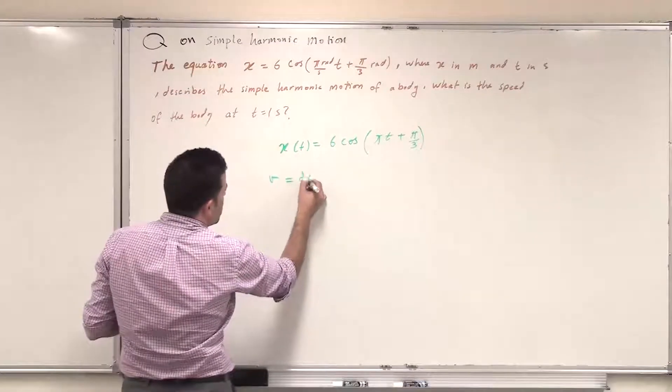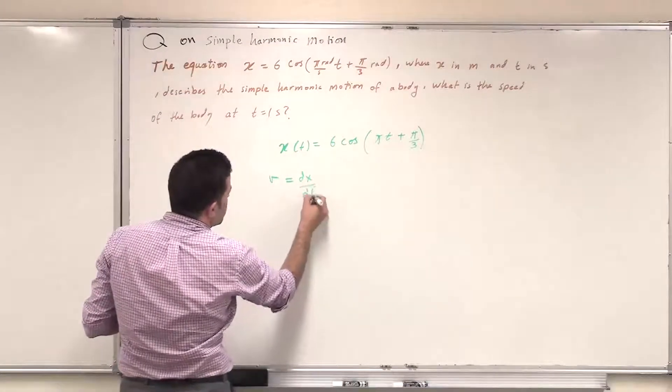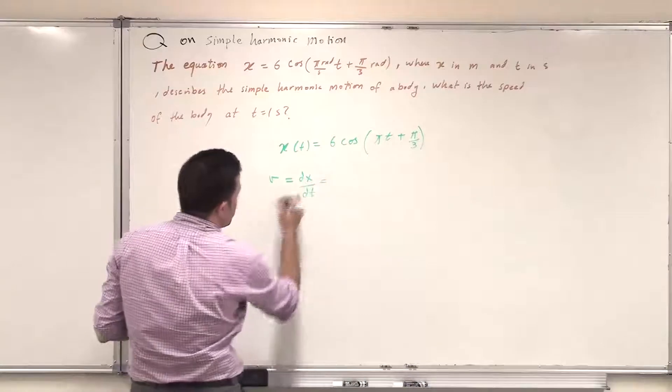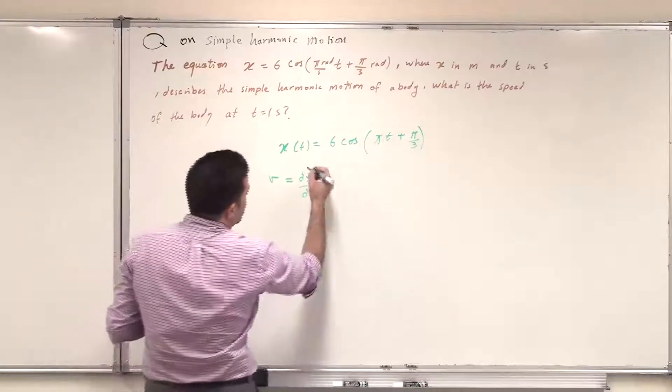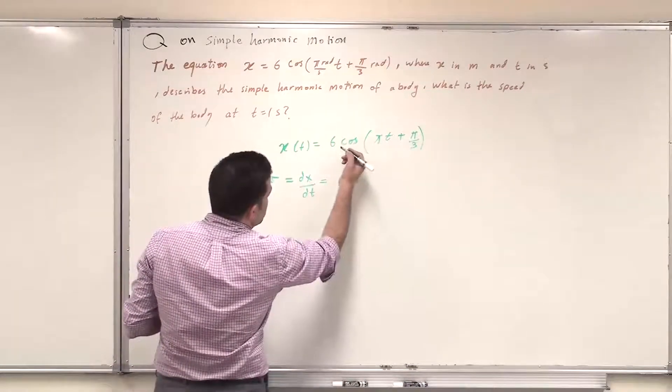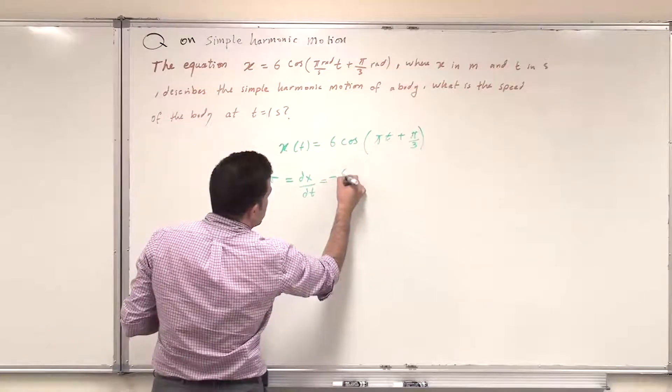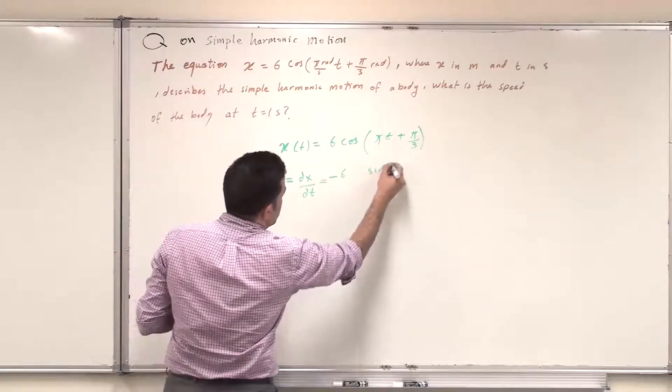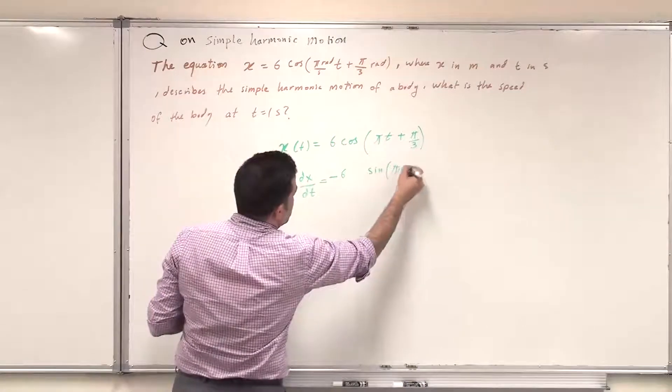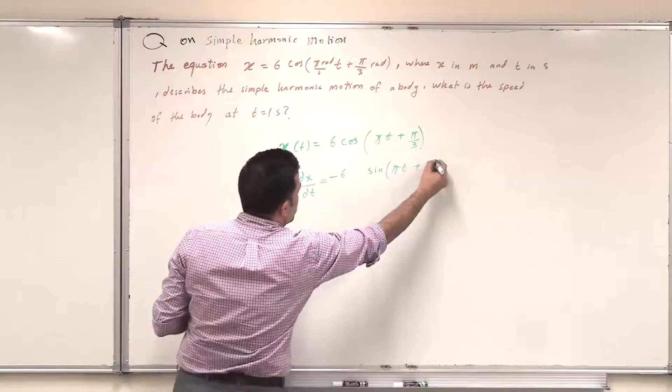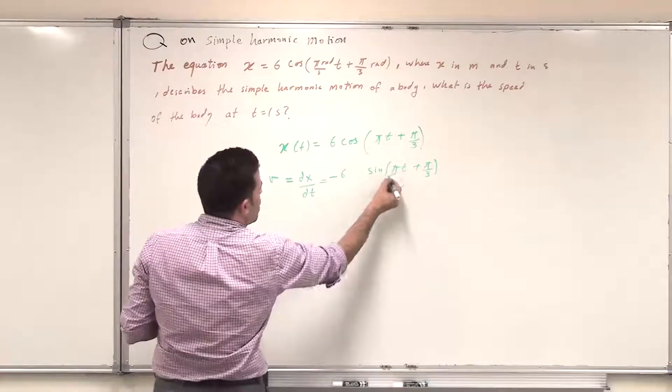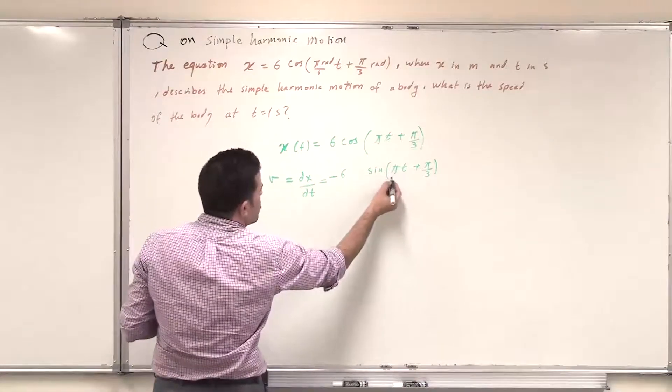So the speed is the derivative dx/dt with respect to time, which yields minus, because the derivative of cosine is sine, but it's minus sine, minus 6 sin(πt + π/3). And we need also to derive what's inside here the sine.